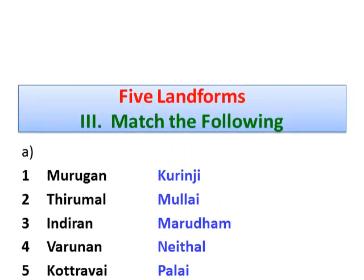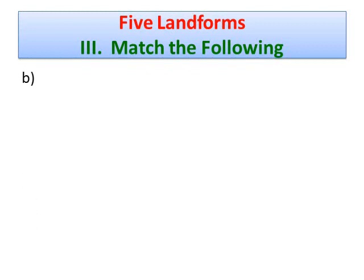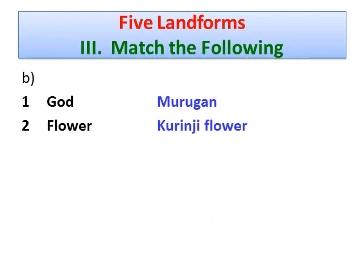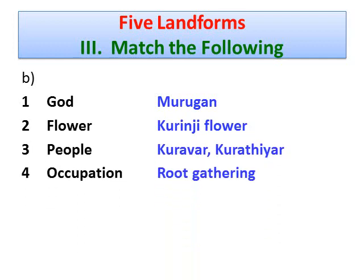For Kurinji: God is Murugan, Flower is Kurinji flower, People are Koravar and Korathiyar, Occupation is Root Gathering.